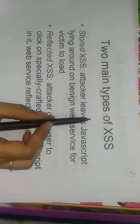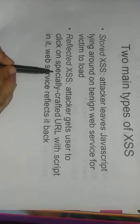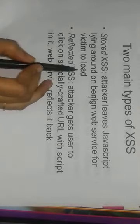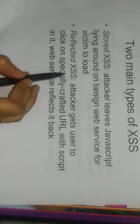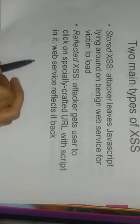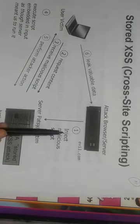There are two main types of cross-site scripting: stored XSS and reflected XSS. In stored XSS, the attacker leaves JavaScript on a vulnerable web server for the victim to load. In reflected XSS, the attacker gets the user to click on a specially crafted URL with a script in it, and the web server reflects it back.